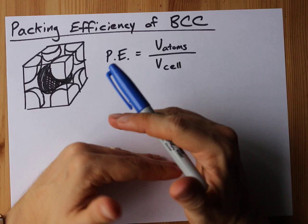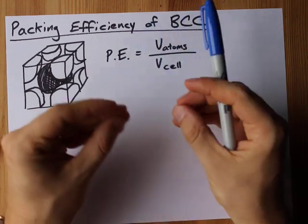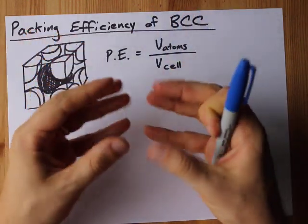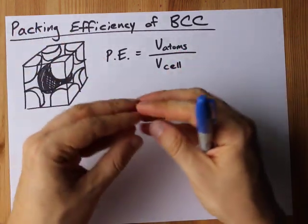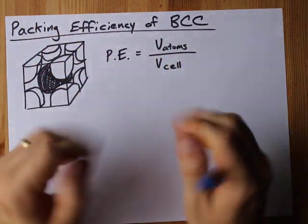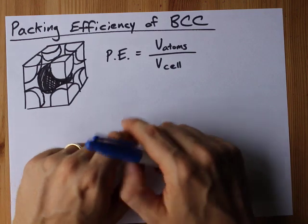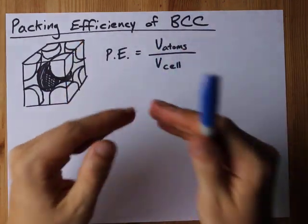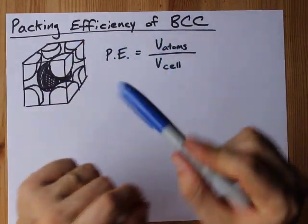If you pack golf balls together there's going to be some empty space in between the golf balls because golf balls are hard and round and they can't expand to fill their containers. There's going to be some empty space in there. The efficiency is how much is actually taken up by the balls themselves, in this case atoms.